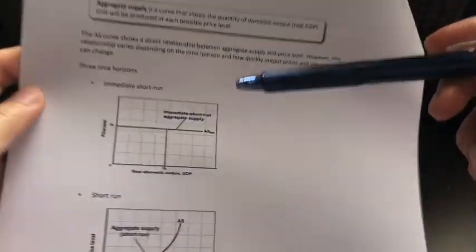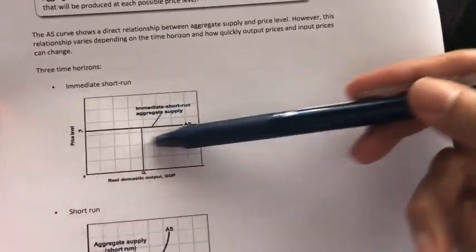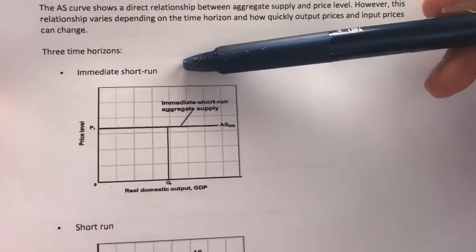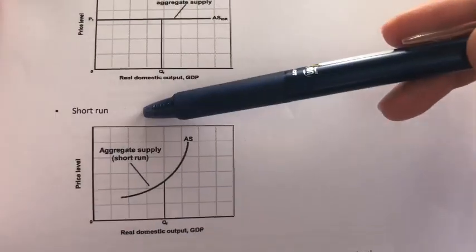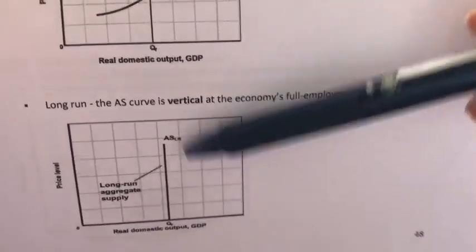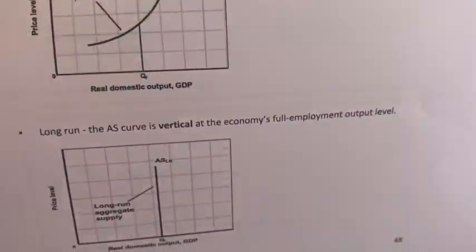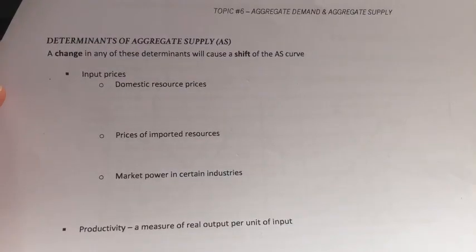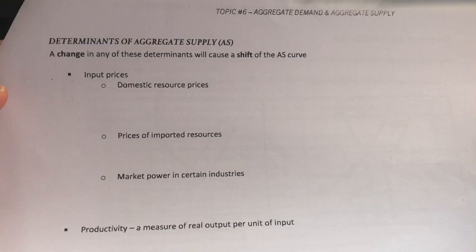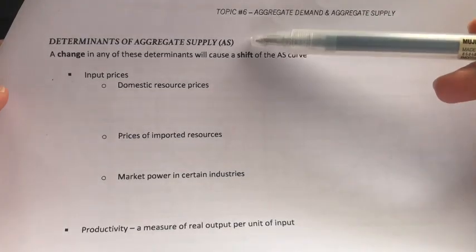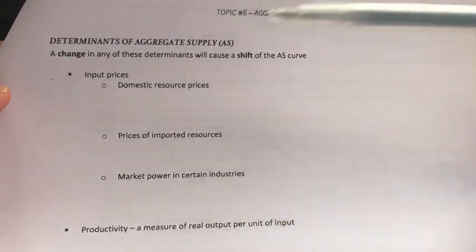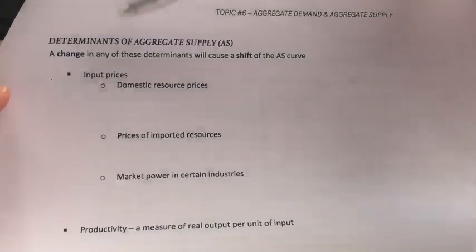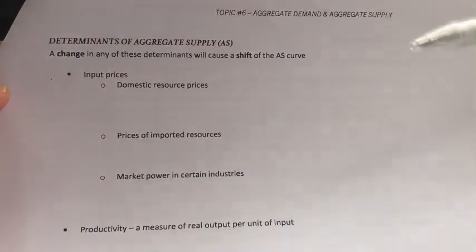To recap: the aggregate supply curve will be a straight line during the immediate short run period, it will be upward sloping during the short run period, and it will be a vertical line during the long run period. After learning about the aggregate supply curve and its different shapes, the next thing to learn is the determinants of aggregate supply.